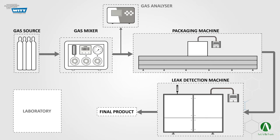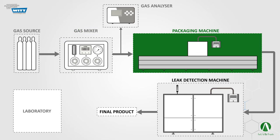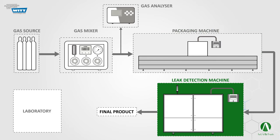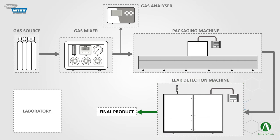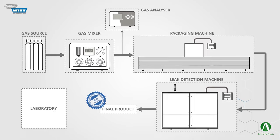In this video, we have gained a good understanding of the different parts of the MAP system. First, we started with the gas sources. Next, we made our desired gas mixtures using the gas mixer, and then packed our product with the most suitable mixture of gases. Finally, we tested our package for any possible leakage with the leak detection machine. If our package is flawless and has no leaks, we can deliver food products of the highest quality to customers thanks to the MAP method.